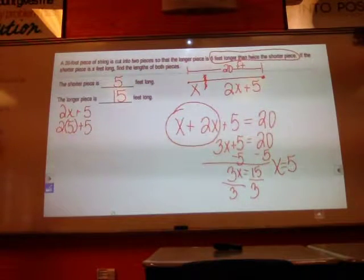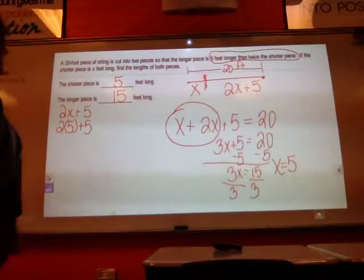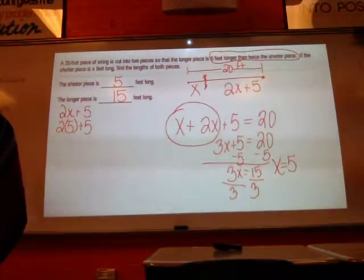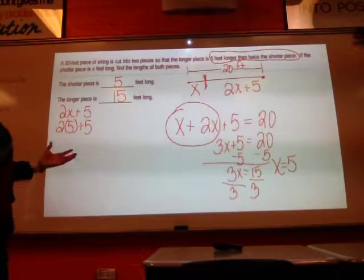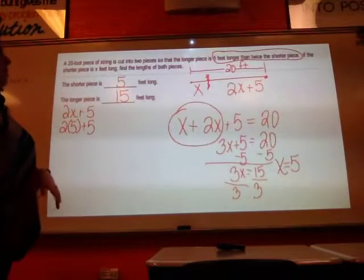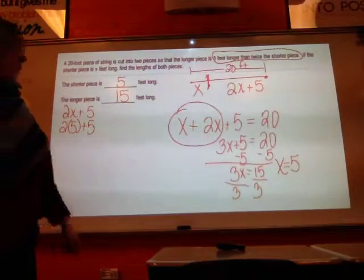The longer piece is 15 feet, and I can double check that. I want to make sure it ends up to give me 20. So I didn't have a picture, but I drew a picture so that it would help me be able to visualize what it was asking me. And then I just set up my equation, and I solved for what I didn't know.